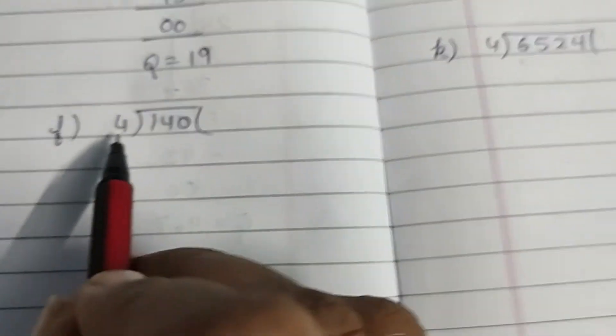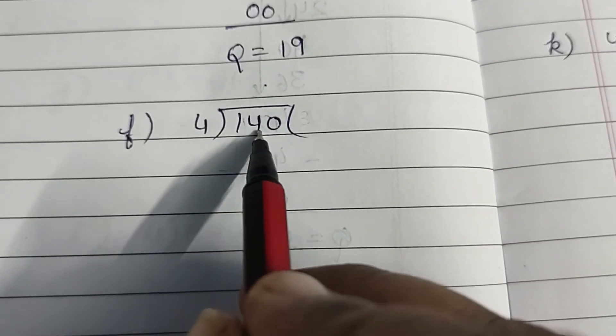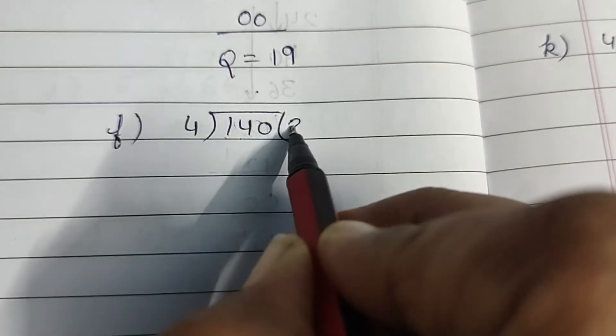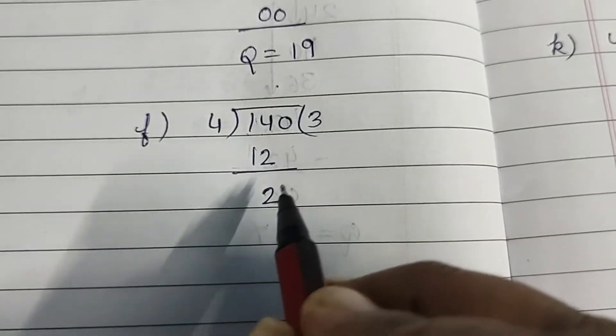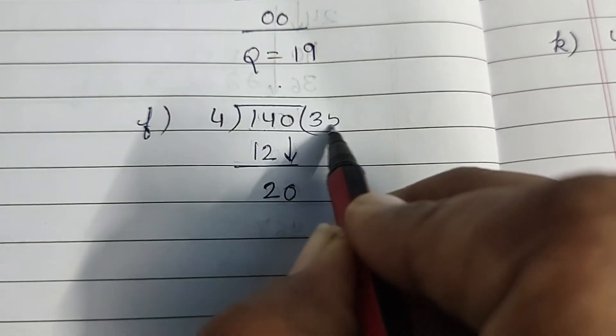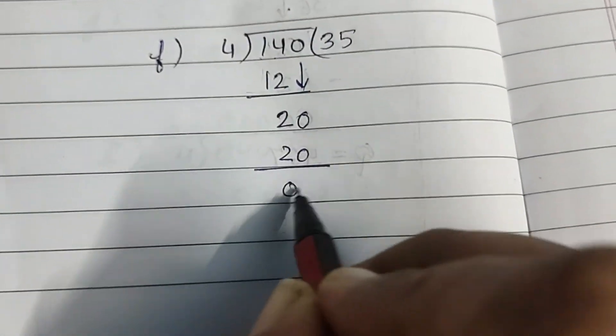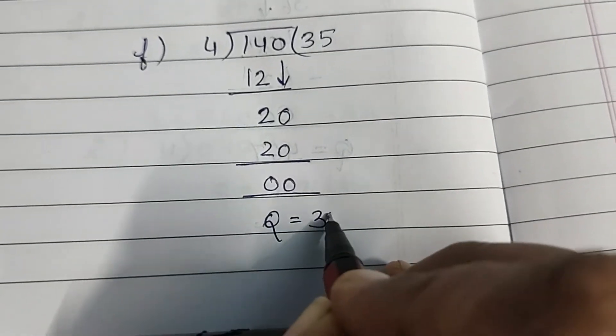Now 4 se divide karna hai 140 ko. 1 jo hai 4 se chhota hai, so hum 14 ko saath me lenge. 14 divided by 4, 3×4, 12. 14 minus 12, 2. Bring 0 down, ho gaya 20. Wait, 24. 5×4, 20. 20 minus 20, 0. Quotient 35.